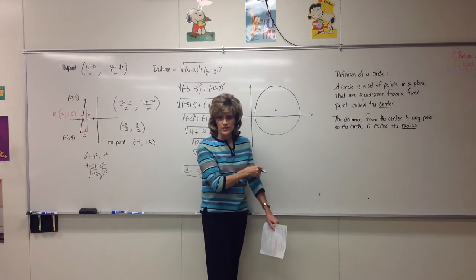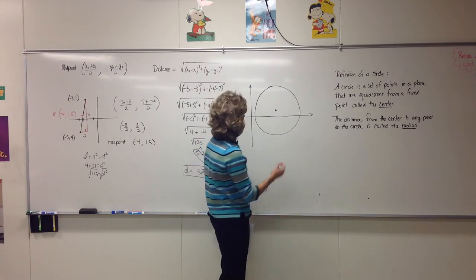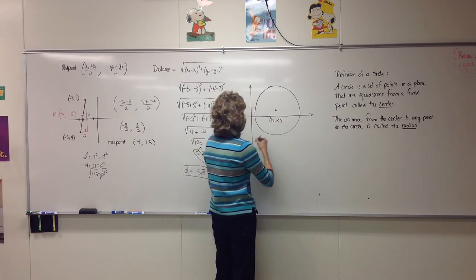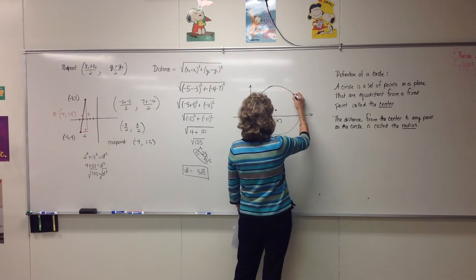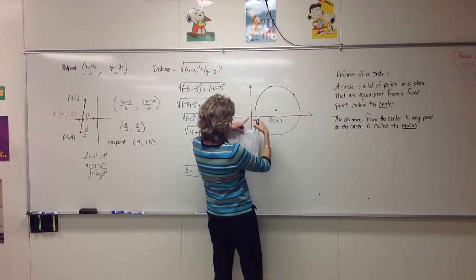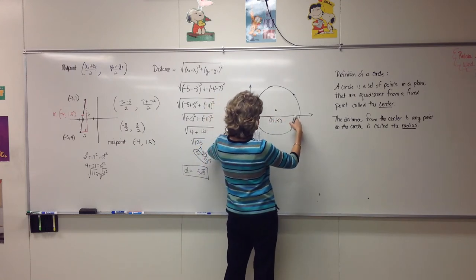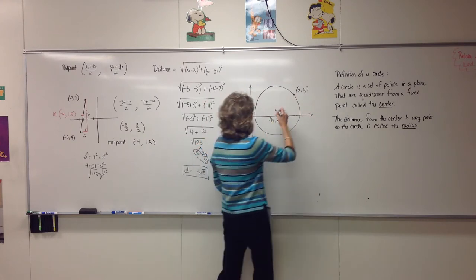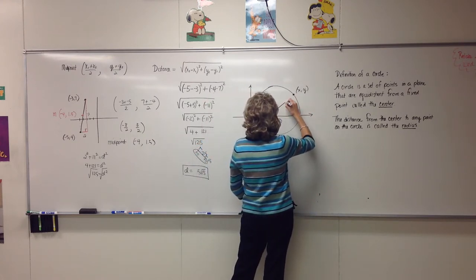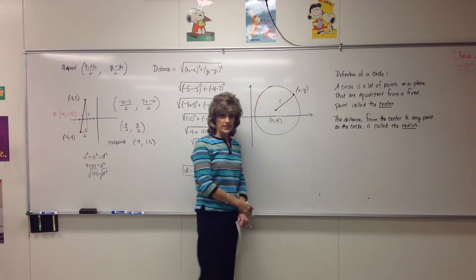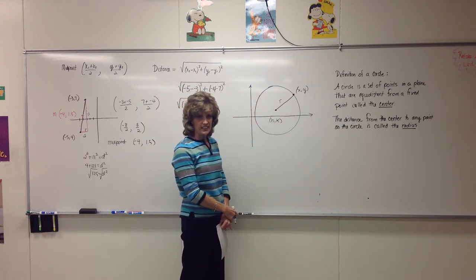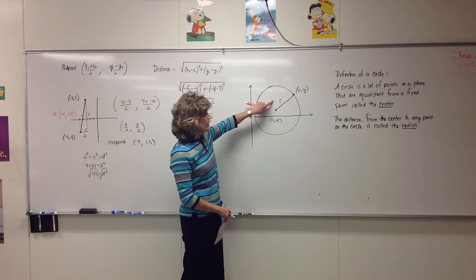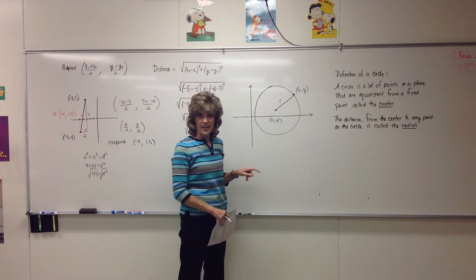For some reason, somebody once upon a time decided that we like to name centers using the letters h, k. So we'll stick with that. If I pick some other point on the circle, to get to that point starting from the center I'd go out some x value and up some y value — I'll name this point x, y. That line from center to the point on the circle is the radius, and I want to know what its length is.